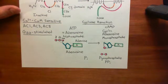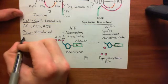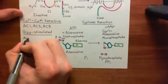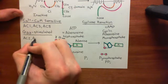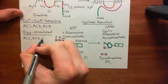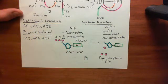The adenylyl cyclase enzymes which are in this G-beta-gamma stimulative family are adenylyl cyclase 2, adenylyl cyclase 4, and adenylyl cyclase 7.